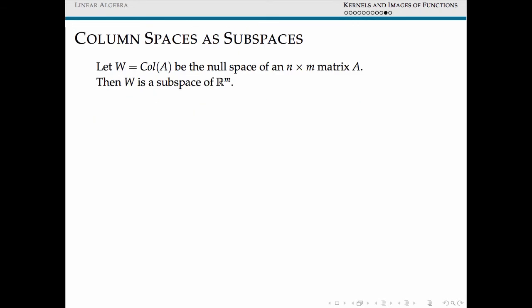Alright, for our final proof of this video, let's actually show that column spaces also satisfy all the properties necessary to be subspaces of our vector space. So looking at our column space, by definition, we need to show two things. One, that given any W inside of our subspace column space, we need CW for any scalar C to also be inside the column space.